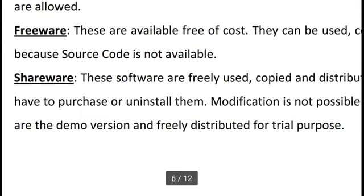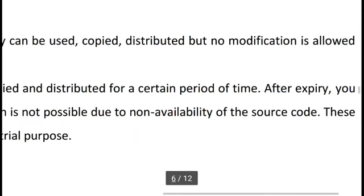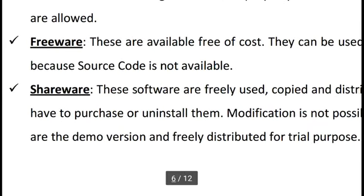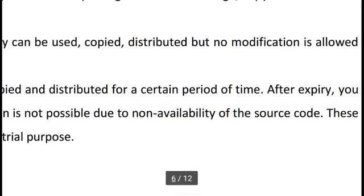Shareware is like a trial version — for example, an antivirus program with a one-month trial. This software can be freely used, copied, and distributed for a certain period of time. After the expiry period, you must purchase or uninstall it. Modification is not possible due to unavailability of source code. It belongs to proprietary software — after the trial period, you must buy it or it automatically deactivates.